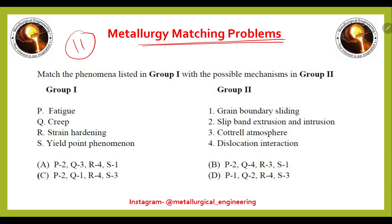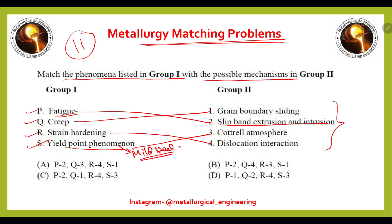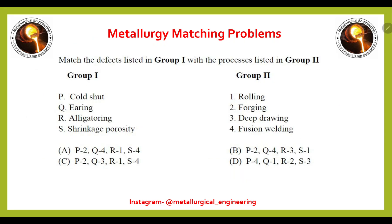In the 11th matching problem, match the phenomena listed in group one — fatigue, creep, strain hardening, and yield point phenomena — with possible mechanisms. Fatigue is associated with slip band extrusion and intrusion (P2), creep with grain boundary sliding (Q1), strain hardening with dislocation interaction (R4), and yield point phenomena with Cottrell atmosphere, most common in mild steel (S3). The right answer is option C: P2, Q1, R4, S3.